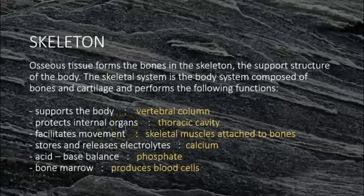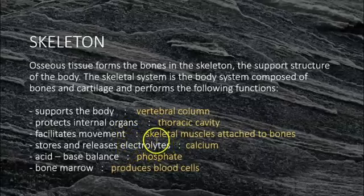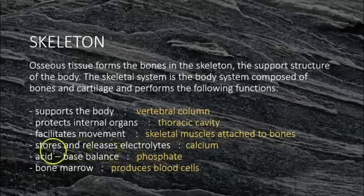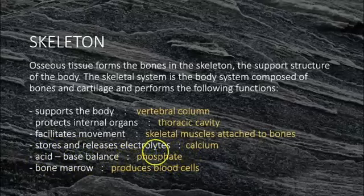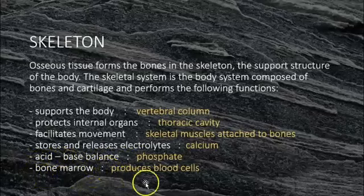The next function is movement — bones are attached to muscles, and the muscles that move the bones are called skeletal muscles. Next is electrolyte balance; the skeleton contains a lot of calcium and phosphate, which influence electrolyte balance. Acid-base balance is controlled with buffers, and since phosphate is a very important buffer found in your bones, it plays a role in maintaining acid-base balance.